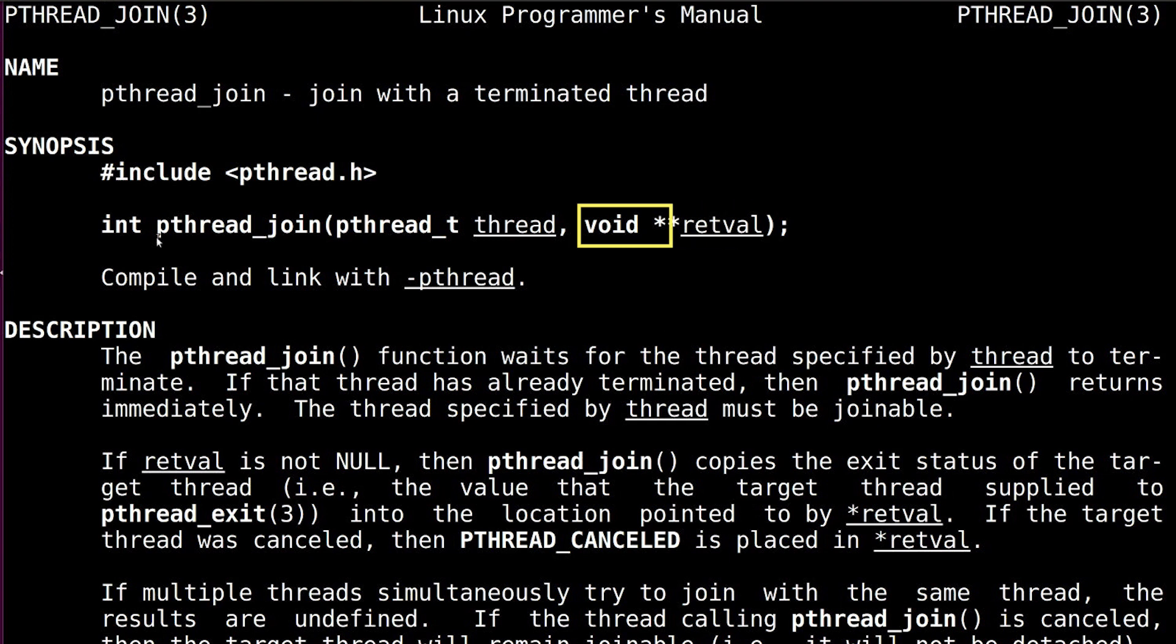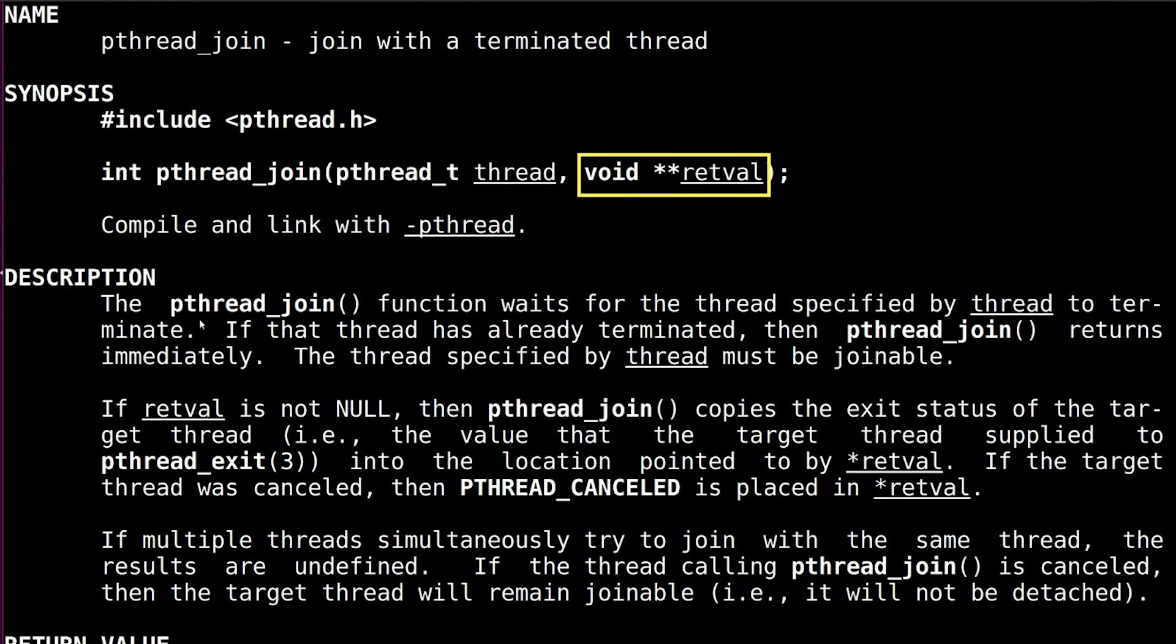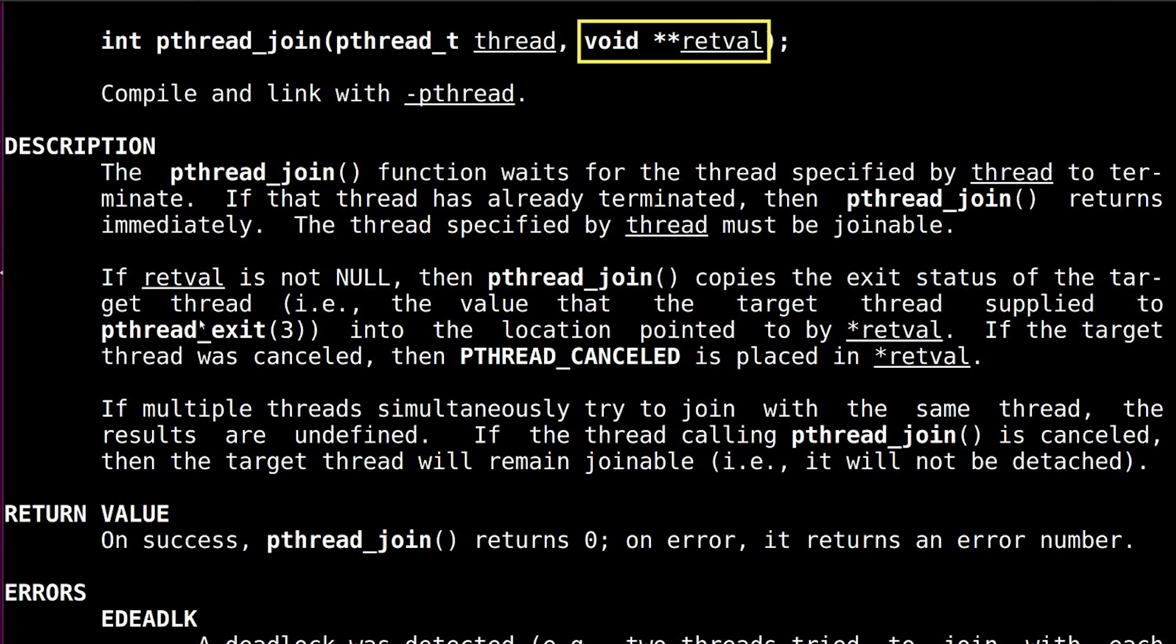Now the return value of a thread in the pthreads library is a void pointer. The function already has a return value, an int. So instead, they're going to use a double pointer. And so if I provide a pointer to some memory that will hold a pointer, then pthread_join will copy the return value of the thread into that memory. If I don't care about the return value, then I can just pass in null.